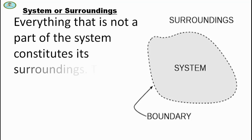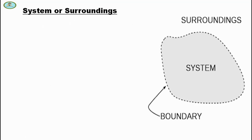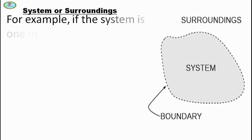The system and surroundings are separated by a boundary. For example, if the system is one mole of gas in a container, then the boundary is the inner wall of the container itself.